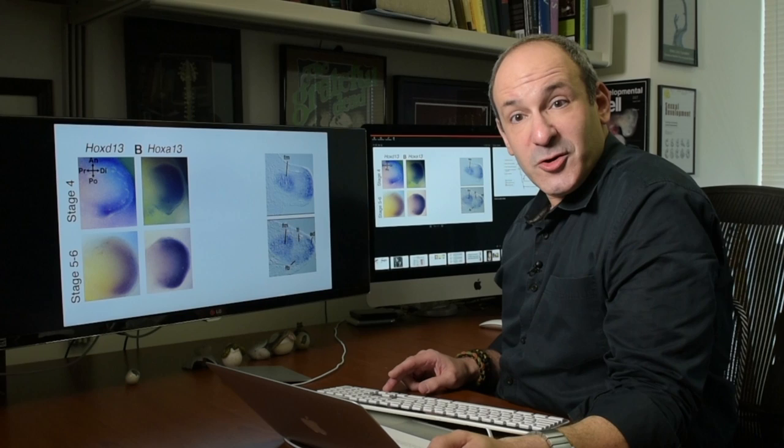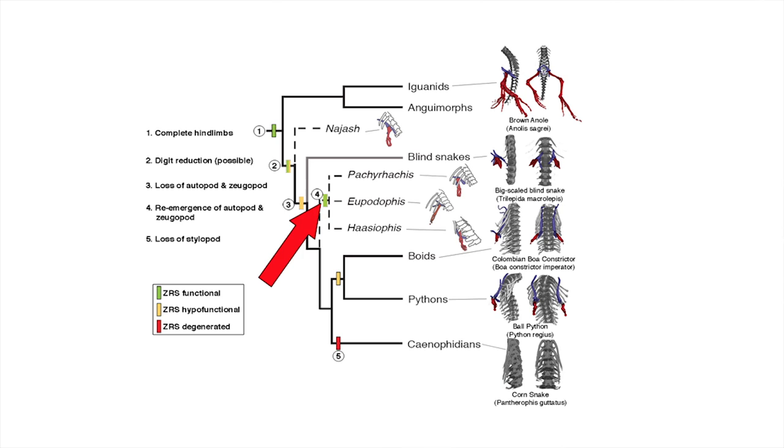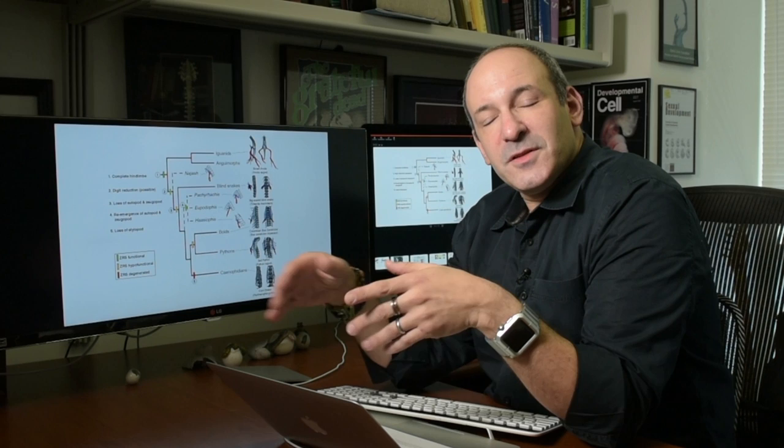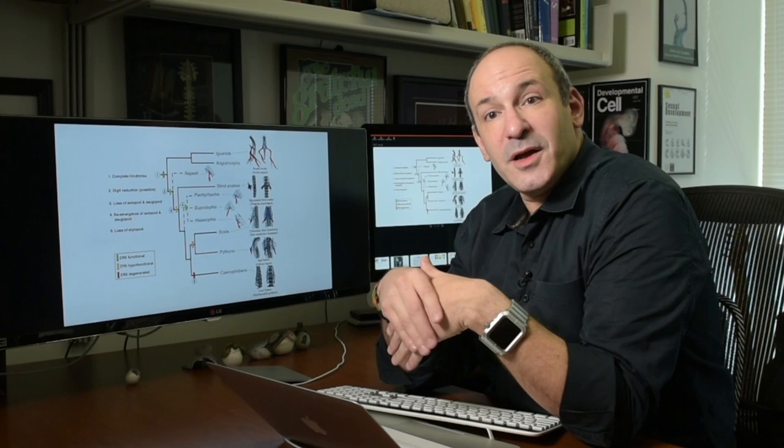So we think that in addition to explaining why hind limb development truncates at such an early stage due to the failure to sustain sonic hedgehog expression, this might also explain one of the mysteries of snake evolution. And that is the reacquisition of limbs. The reappearance of these structures in evolution is a difficult thing to explain. And I think what our results suggest is that they never really lost the hind limb altogether. The early model of the cartilage for each of the hind limb elements was never lost. It's still present in modern pythons. So perhaps reacquisition of limbs by these extinct groups of snakes might have simply involved holding on to the structures that they had and allowing them to differentiate rather than to degenerate.